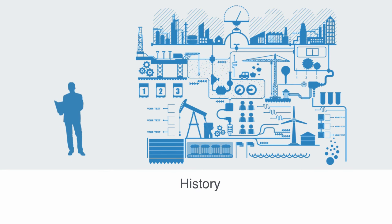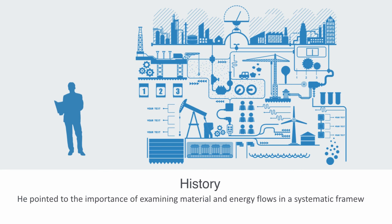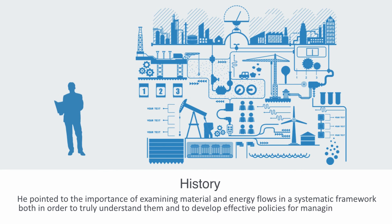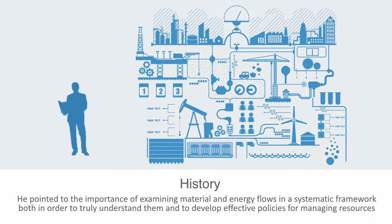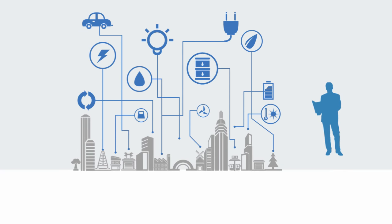Although industrial ecology only really came of age in the 1990s, its foundations were laid in the decades before. Robert Ayers is recognized for bringing together many of the basic ideas that have comprised industrial ecology since the late 1960s. He points to the importance of examining material and energy flows in a systemic framework, both in order to truly understand them and to develop effective policies for managing these resources. His work was groundbreaking in that it introduced thermodynamics to the area. Ayers was one of the earliest scientists to bring second law notions into industrial ecology, and his work stressed the importance of exergy as the proper measurement in studying industrial energy use.